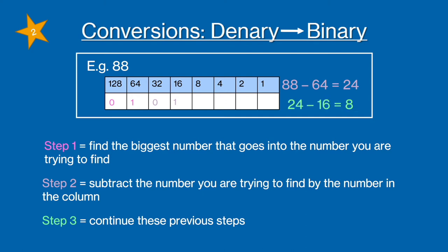So we're going to have 24 minus 16 is 8. So we're going to put a 1 in the 8 column and now because 8 minus 8 equals 0 we're going to add zeros for the rest of the columns as placeholders. And that's your answer: 0 1 0 1 1 0 0 0.